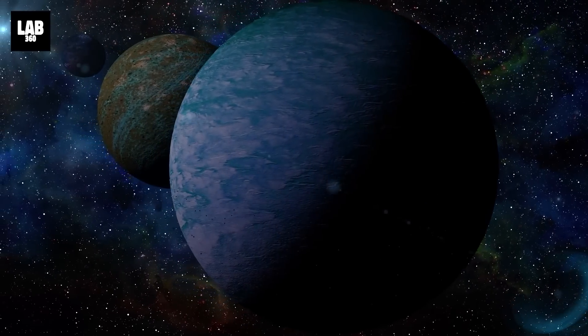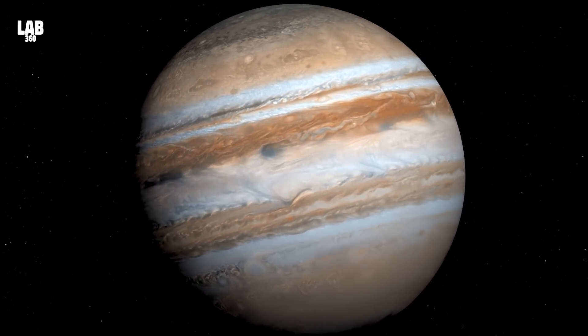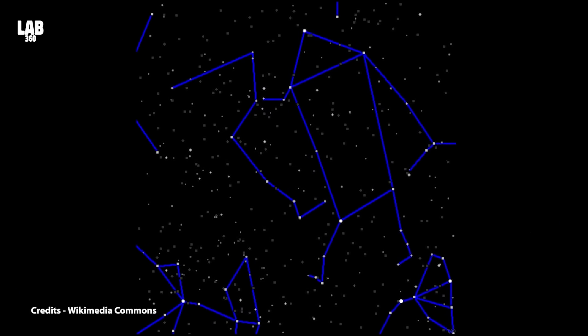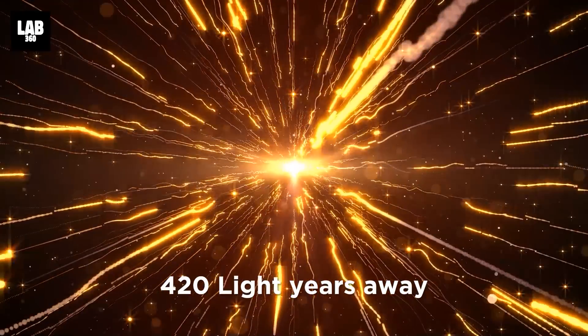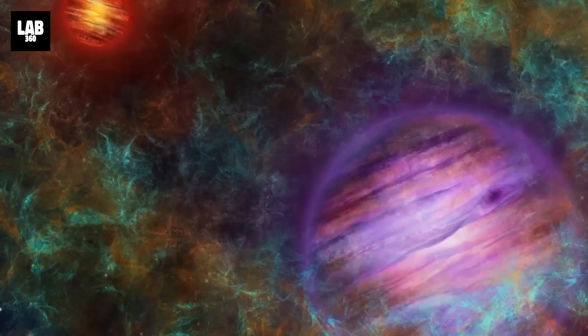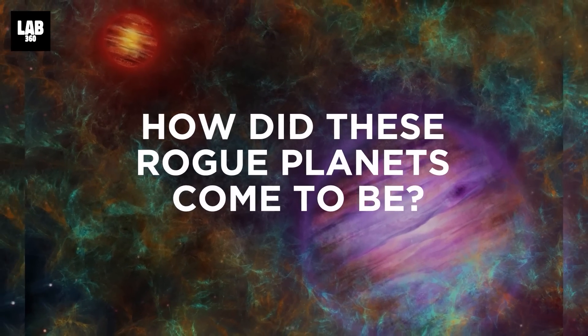They found that many of the planets have masses comparable to Jupiter's in a star-forming region close to our Sun, located within the Scorpius and Ophiuchus constellations. This region of sky lies 420 light-years away from Earth. The detection of so many rogue planets also begs the question, how did these rogue planets come to be?